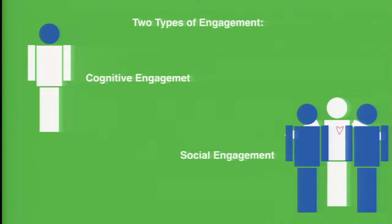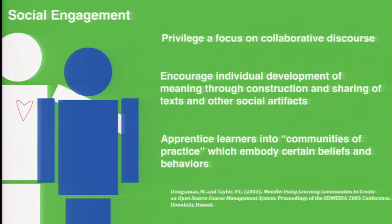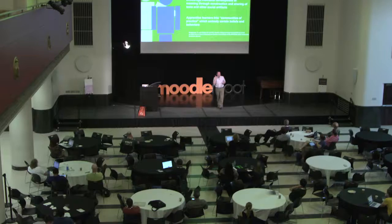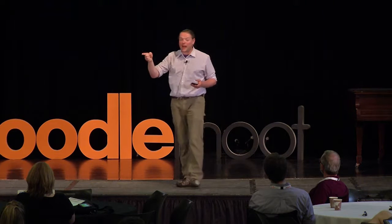Moving from cognitive to social engagement. Quoting Martin again: if you want people to be socially engaged in their learning, you have to privilege a focus on collaborative discourse, encourage individual development of meaning through construction and sharing of texts and other social artifacts, and apprentice learners into communities of practice which embody certain beliefs and behaviors. You can be a mediocre online teacher about any subject except for online teaching — in this course, I had no choice but to walk the walk. You have to apprentice your learners into communities of practice by embodying the beliefs you're trying to teach them.